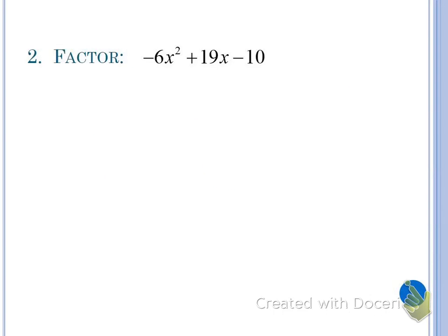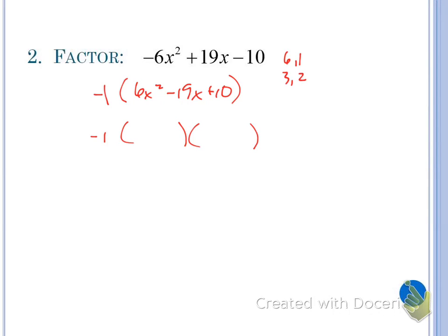Next one. Again, we're looking for a greatest common factor, and that greatest common factor is a negative one. We divide all terms by negative one, which basically just means change the sign on everybody. Then we're ready to factor down into two binomials. This one is going to be a little bit different than the first one because 6, the lead coefficient, factors more — the factors are not just 1 and 1. Factors of 6 are 6 and 1, or 3 and 2. Factors of 10 are 10 and 1, 5 and 2, or their negatives.